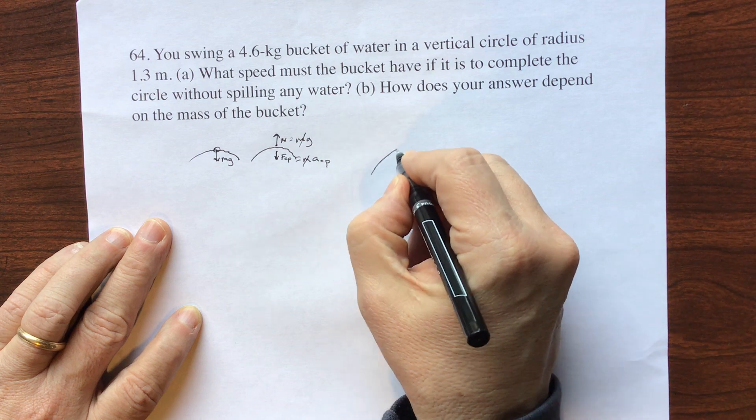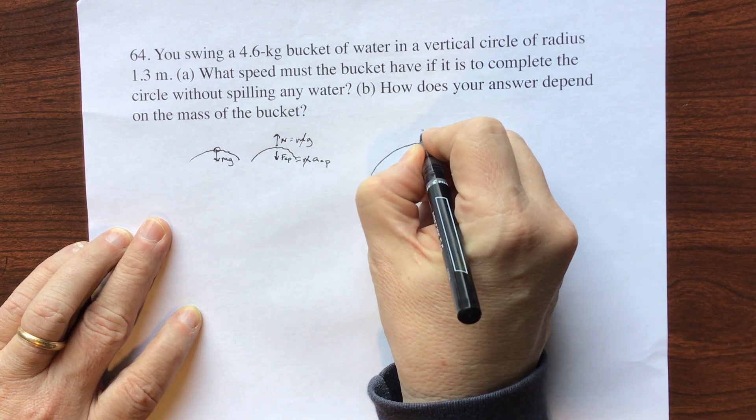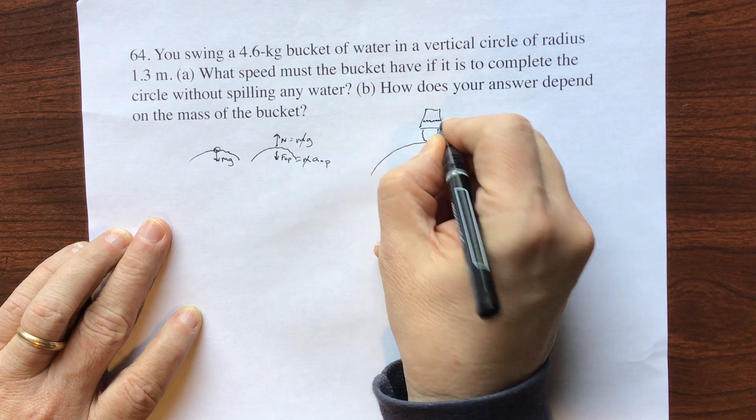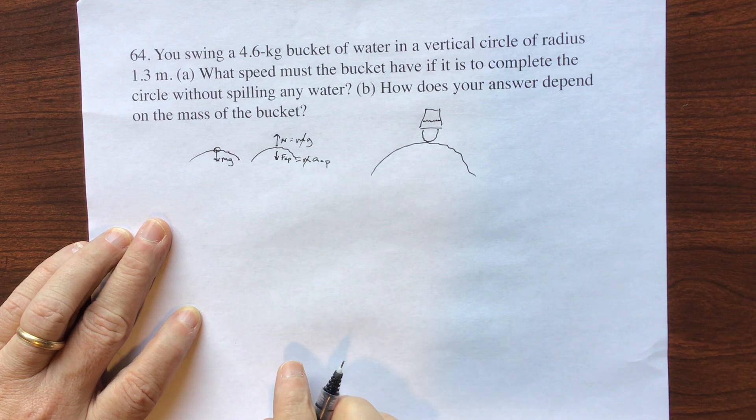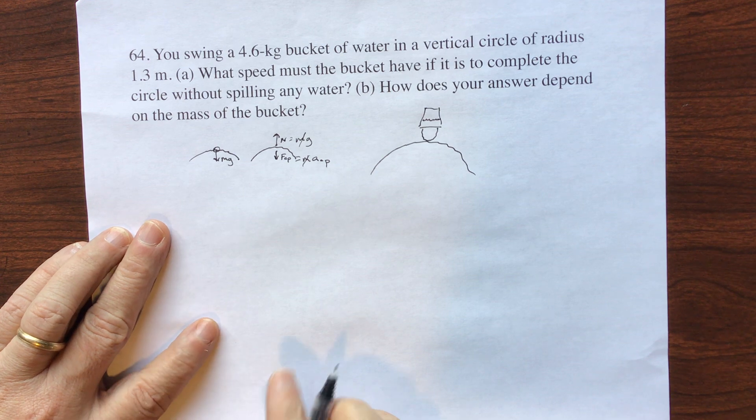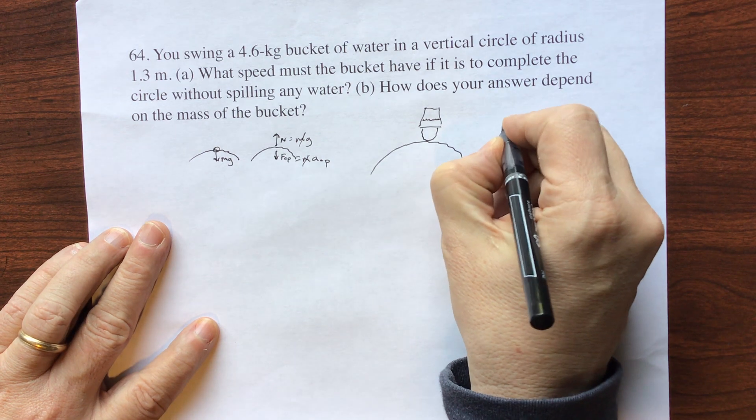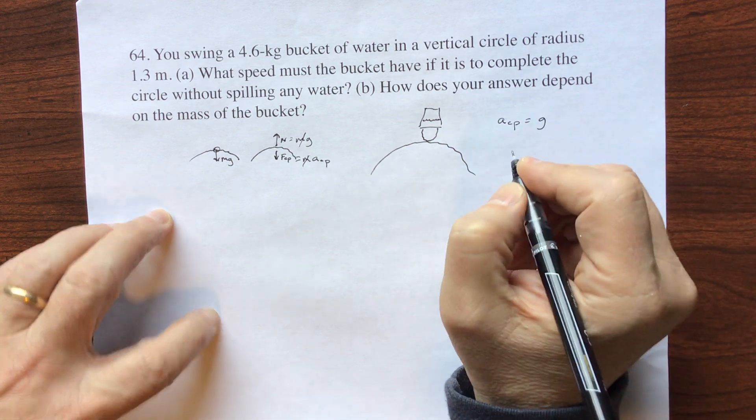So if you have a bucket that's going around an arc, so here's the handle of the bucket and here's the bucket and I've got some water in the bucket. And as it goes to the top of the arc, the water stays in the bucket. Well, it must be at least, I mean, I guess you could go faster, but it has to at least be weightless. It has to be going fast enough to where it's at least weightless, which means that your centripetal acceleration has to equal gravity.